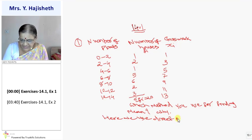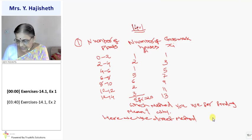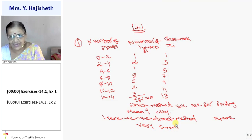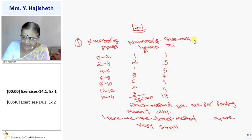So, here we use direct method. Because step deviation se bhi is se chhota method nahi hone wala hai. XI are too small. Because here, numerical value of XI are very small. So, it is better to apply direct method. Direct method mein ek hi column nikalna hai, FI, XI.